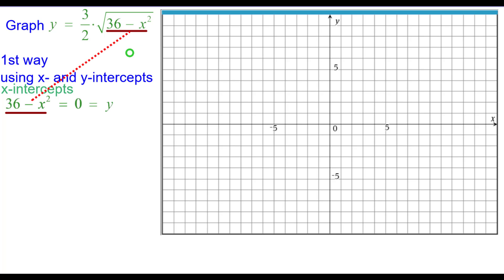So we're going to set 36 minus x squared equal to zero and solve that for x. Adding x squared to both sides and taking the square root of both sides, making sure we get plus or minus both square roots, x is equal to plus or minus 6, and these are our x-intercepts with a y coordinate of zero. So we'll plot those two points.